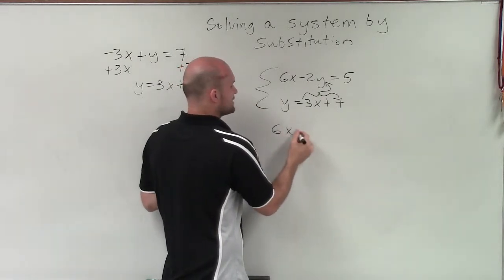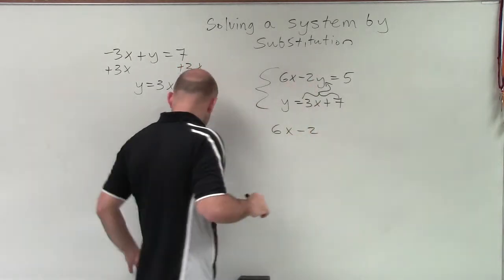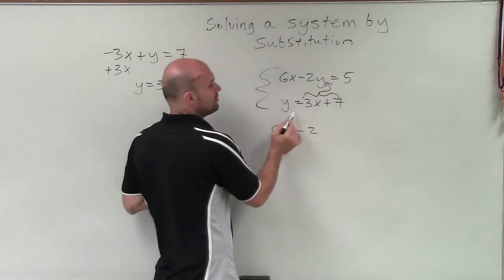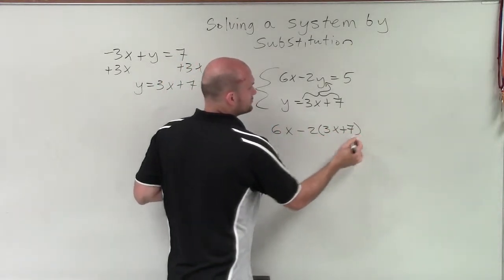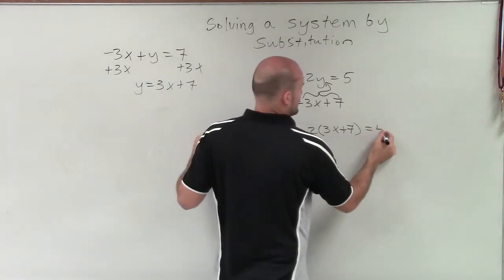So I'll have 6x minus 2, and not just times y, but what does y represent? y represents 3x plus 7, equals 5.